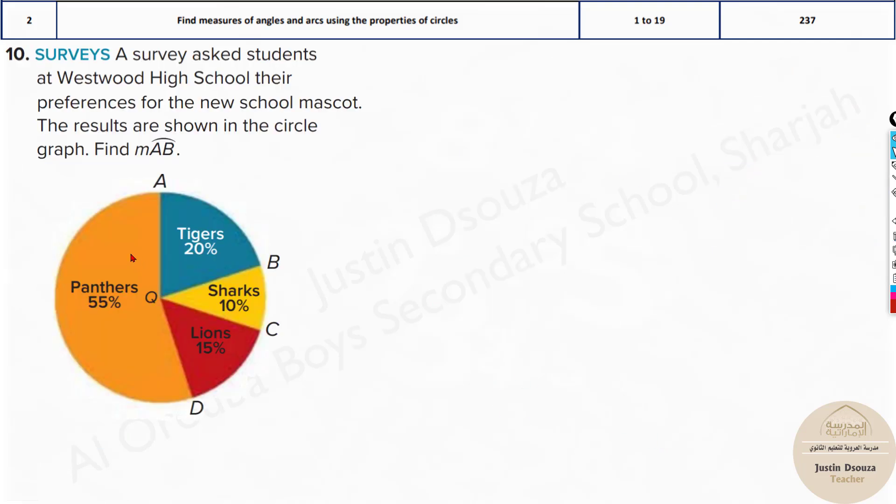Now we have a circle and they have given us percentages. A survey asks students at Westwood High School their preferences for new school mascot. The results are shown in the circle graph. Find arc AB. Now they are just given as a percentage, just 20% here.